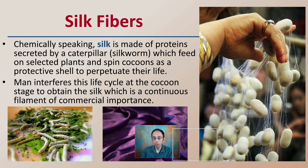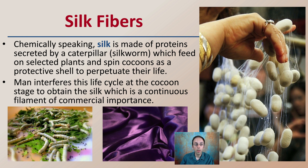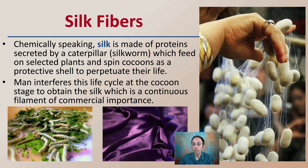Silk fibers are also made of proteins, secreted by a caterpillar — specifically a silkworm. They feed on selective plants and spin cocoons, forming silk as a protective shell to perpetuate their own life. Man interferes with the life cycle at the cocoon stage to obtain the silk, which is a continuous filament of commercial importance and is thought to produce very high-end fibers.